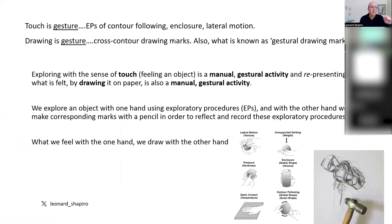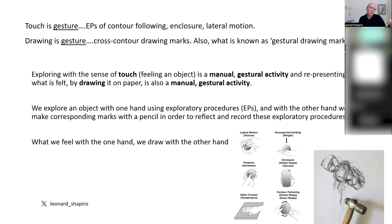Essentially, what we're talking about is that touch is gesture. The exploratory procedures of contour following, enclosure, and lateral motion are gestural, and drawing is also gesture. We're exploring with the sense of touch — feeling the object or anatomical part — which is a manual gestural activity. And we're representing what is felt by drawing it on paper, which is also a manual gestural activity. We explore an object with one hand using exploratory procedures and with the other make corresponding marks with graphite to reflect and record these.